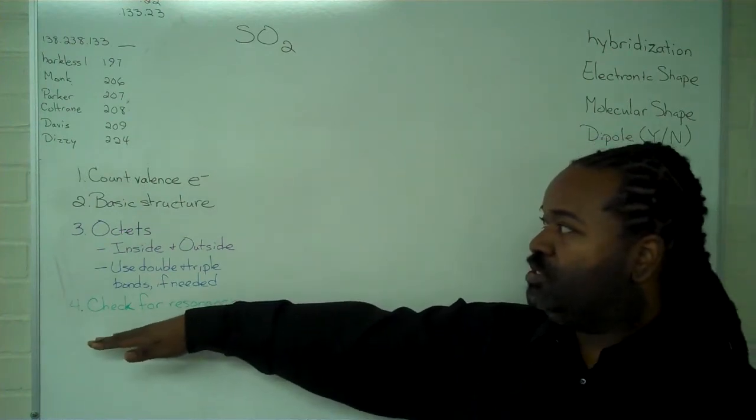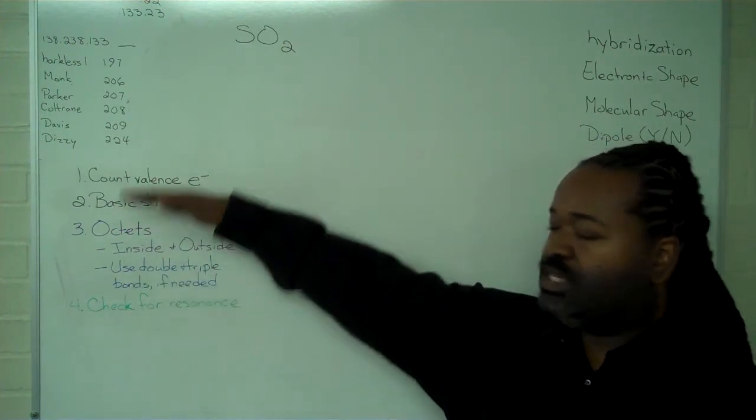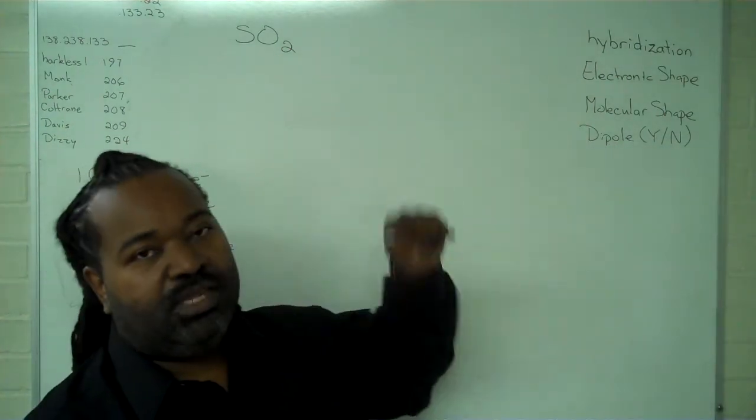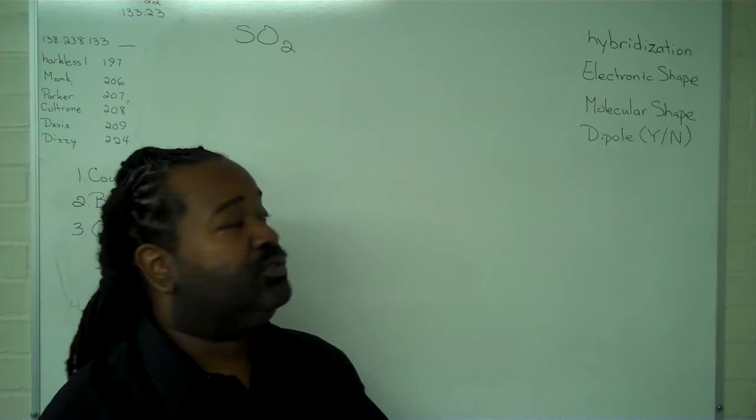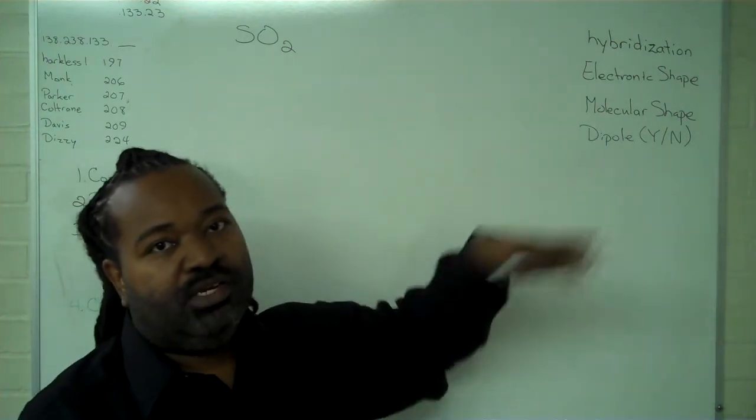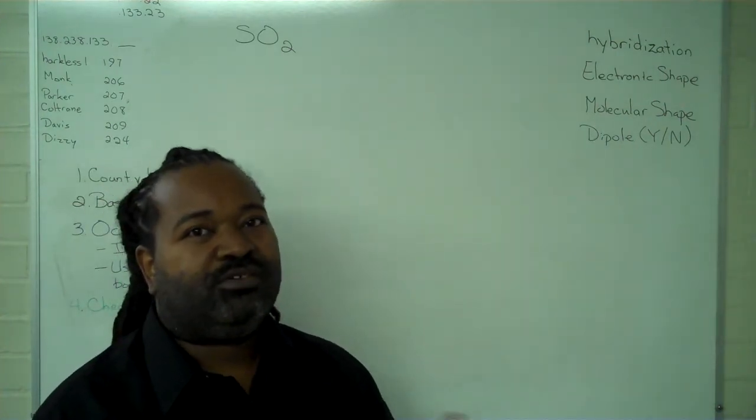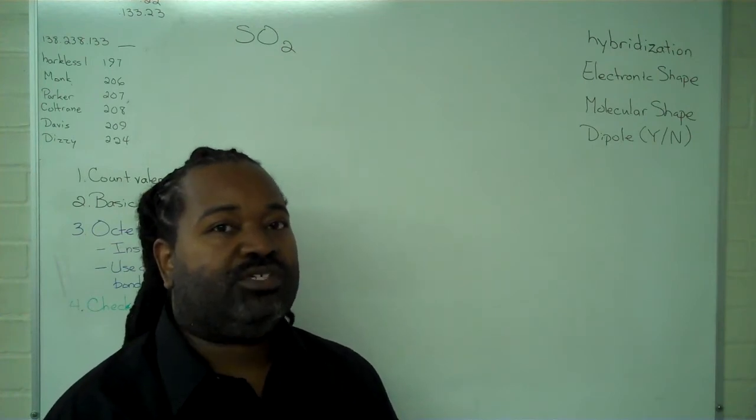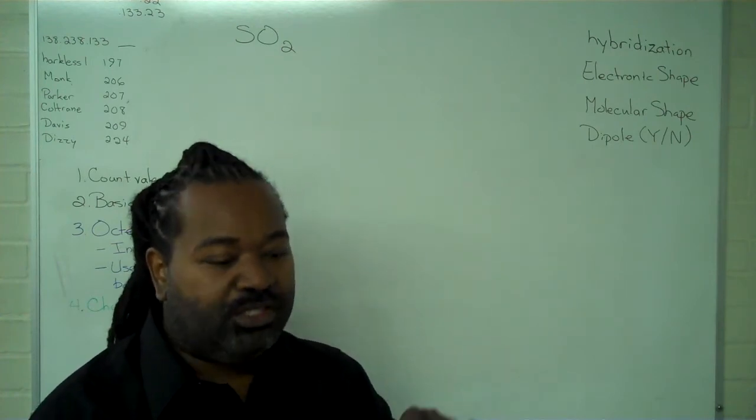The Lewis structure procedure is written over here in a shortened form, and the information that we can extract directly from the Lewis structure is written over here. In the case of the dipole moment and the final check step where we find formal charges, we'll actually have to draw much of that information on the structure itself.